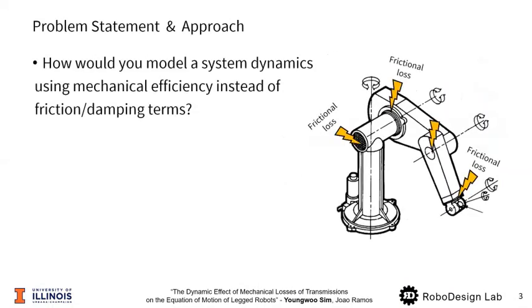To answer these questions, I'm going to try something different, which is to use mechanical efficiency instead of friction and damping terms. To do so, tracing down the friction losses is the key, which takes place at the contact surface between transmission components.